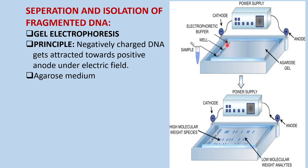At the negative cathode side, some wells are present where the sample — the cut-out DNA to which restriction enzyme has already been added — is placed. After placing the sample in the wells, current is supplied and the electrophoresis is run; consequently, the fragmented DNA will separate out. Smaller fragments will move more towards the positive side, while larger fragments remain more towards the negative cathode side. Friction plays a role in this separation.